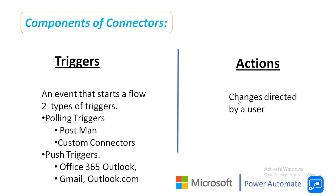A polling trigger is basically an event that periodically makes a call to your service to look for new data. When new data is available, it causes a new run of your workflow instance with the data as an input. Under polling triggers, we have Postman as well as custom connectors as examples.